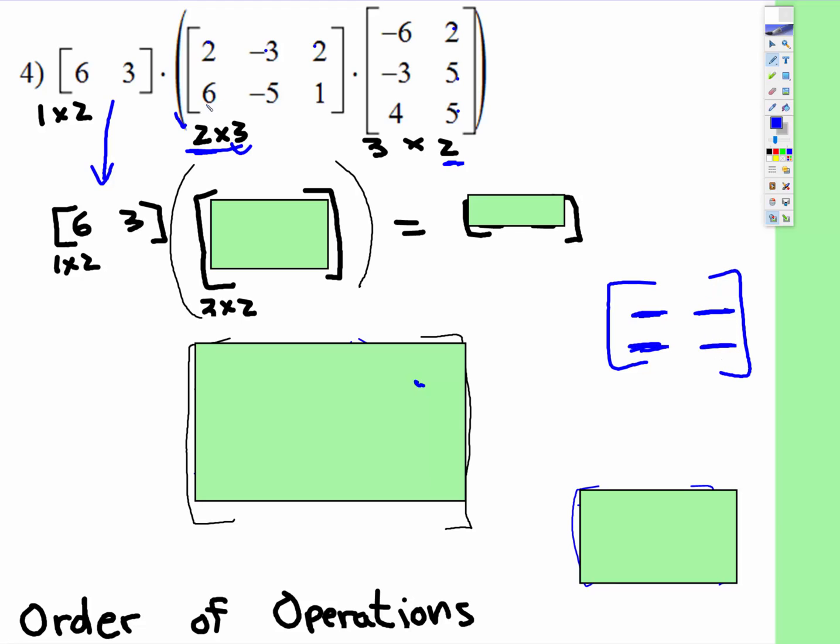And we're going to do the bottom two. So you're going to start down here, the lower level. Six times negative six plus negative five times negative three plus one times four is going to go in this location. And then for the last location, six times two plus negative five times five plus one times five. The sum of those three products goes here.